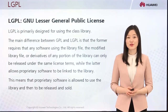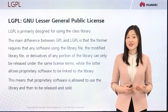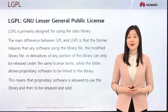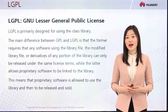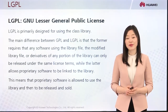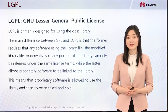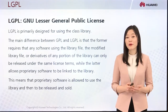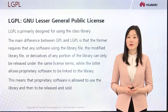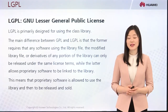LGPL is short for the GNU Lesser General Public License. LGPL is primarily designed for using the class library. The main difference between GPL and LGPL is that GPL requires that any software using the library file, the modified library file, or the relatives of any portion of the library can only be released under the same license terms, while LGPL allows proprietary software to be linked to the library. This means that proprietary software is allowed to use the library and then be released and sold.